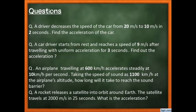If there is any problem, you can ask in the comment section. Next question: a rocket releases a satellite into orbit around Earth. The satellite travels at 2000 m/s; in 25 seconds it maintains that speed. You are given velocity and time — find the acceleration. Try these questions yourself.